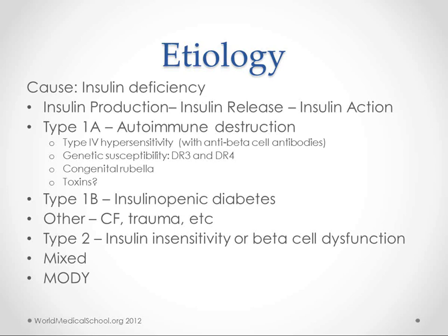There is a genetic susceptibility — we talk about DR3 and DR4 as the genes associated with it — but type 1 is actually less genetically mediated than type 2. Congenital rubella also has an association with type 1 diabetes, as do certain toxins, though that's still being researched. Basically any other way you might destroy pancreas cells can cause diabetes: cystic fibrosis, fat necrosis after trauma, and a long list of other ways to damage the pancreas. Some endocrine causes associated with it include Addison's disease and others.